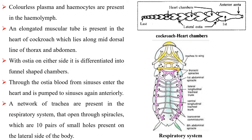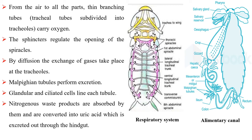Through the ostia, blood from sinuses enters the heart and is pumped to sinuses again anteriorly. A network of trachea is present in the respiratory system that opens through spiracles, which are 10 pairs of small holes present on the lateral side of the body. Thin branching tubes carry oxygen from the air to all parts. The sphincters regulate the opening of the spiracles.